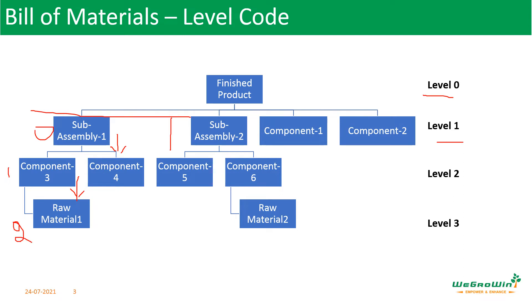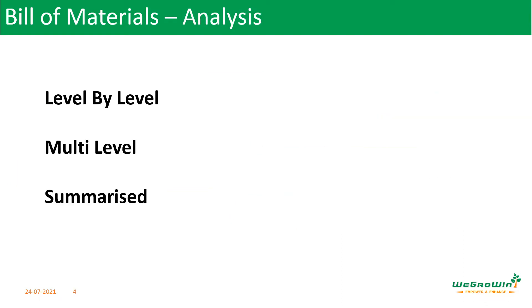We need to understand these levels when we do analysis of bill of materials. When you see the reports, we should be able to read them clearly if we understand these levels. The reports can be seen level by level — one level at a time — or by seeing multi-levels of materials, or we can see a summarized view. Bill of materials can be analyzed in different aspects.